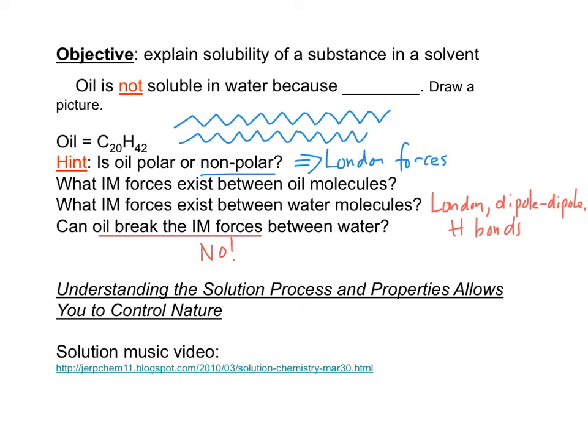To summarize: a solute is soluble in a solvent if the chemical forces between solute and solvent are stronger than the chemical forces between solute and solute. For a molecular solution, the chemical forces between solute and solute are intermolecular forces. For an ionic solution, the chemical forces between solute and solute are ionic bonds.